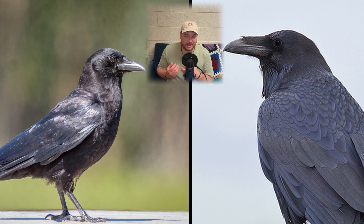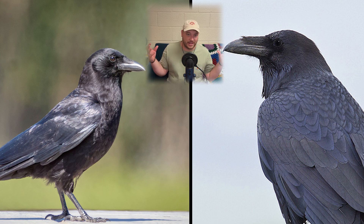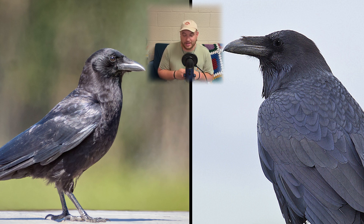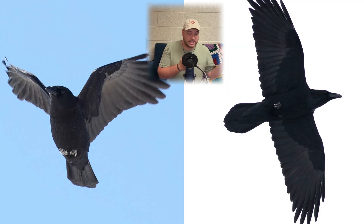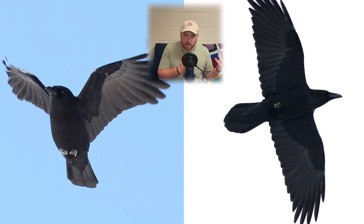When these birds are perched, they're by far the hardest to ID between the two. In flight it's a little bit easier, but when they're on the ground it's just really difficult. In flight, there are a few subtle differences you can pick out to distinguish whether this is an American crow or a common raven.